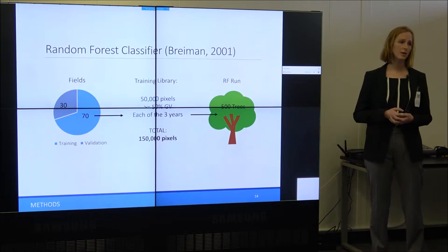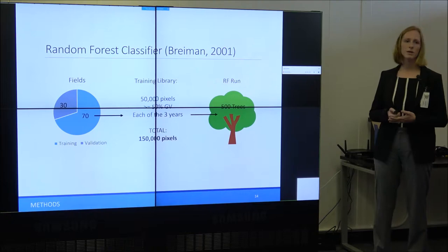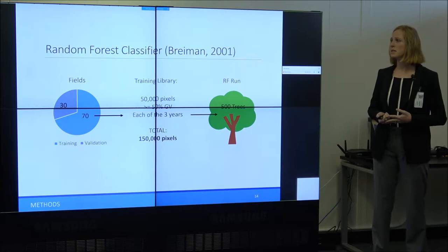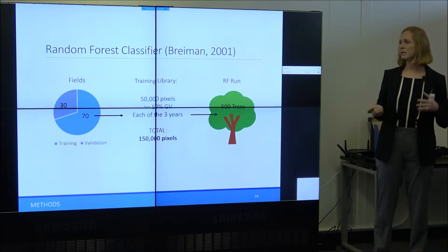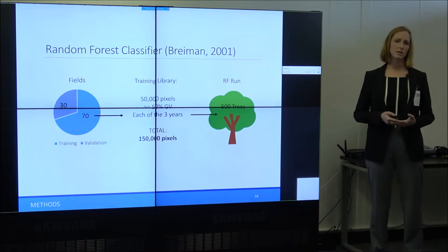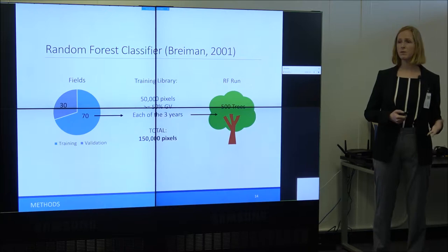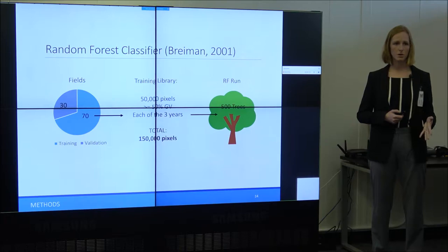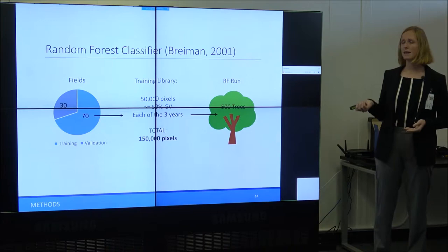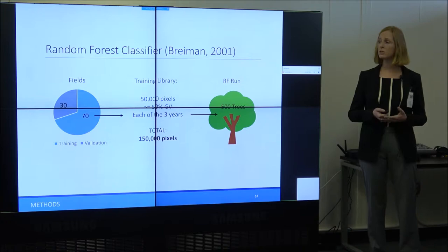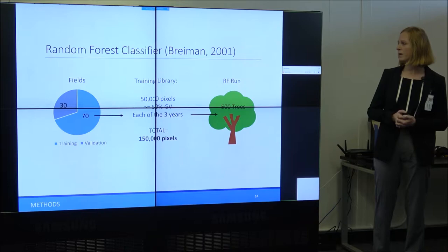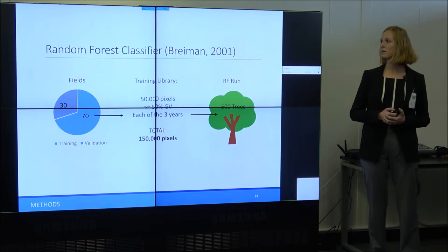I then used a Random Forest classifier to classify each pixel into one of the nine crop categories. Random Forest is a machine learning algorithm that populates a series of decision trees that vote on the correct class, and it has proven success in similar studies. I broke my data into 70% training and 30% validation, using county crop polygons from the Cal Ag pesticide permitting program. I randomly sampled 50,000 pixels from each image — all pixels with at least 50% green vegetation — and populated 500 trees for my classifier.